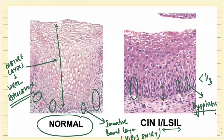Disordered arrangement of these cells with hyperchromatic nuclei. You can compare it with the normal on the left-hand side. Let me show you another image.